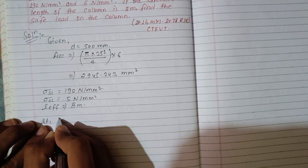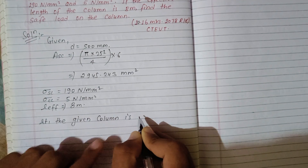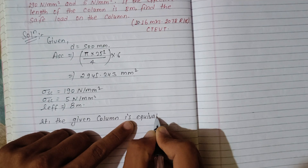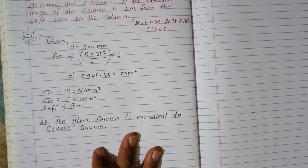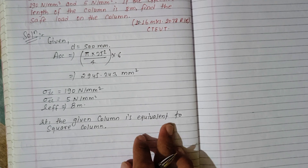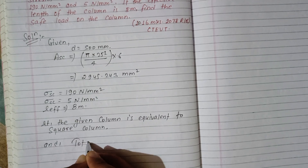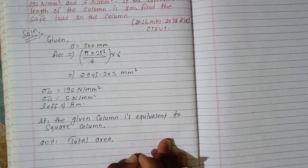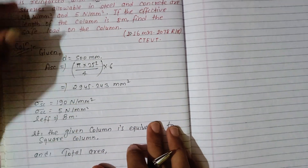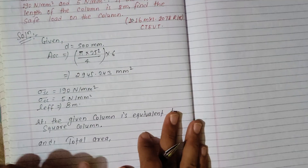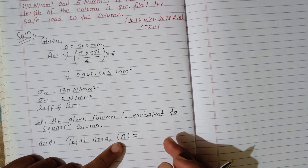Since we have a round RC column, we need to convert it to an equivalent square column. Let the given circular column be equivalent to a square column, such that the total area of the round column equals the total area of the square column.